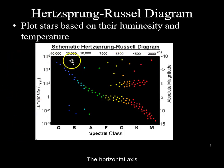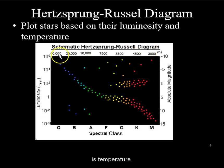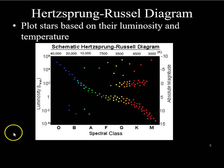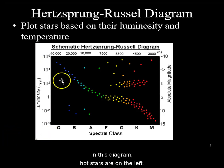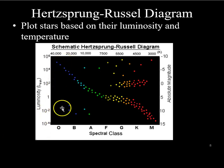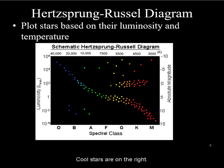The horizontal axis is temperature. In this diagram, hot stars are on the left and cool stars are on the right.